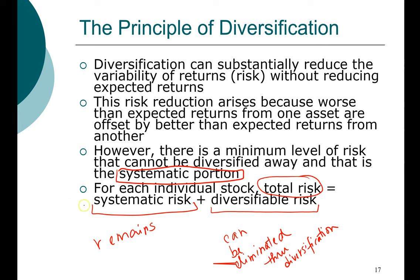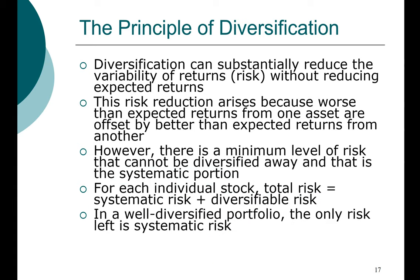It is very important to distinguish between the risk of an individual stock and the risk of a portfolio. For an individual stock, total risk has two components: a systematic component and a diversifiable component. Part of that risk can be eliminated through diversification, but part cannot. At the portfolio level, in a well-diversified portfolio, the only risk that remains is systematic risk. An under-diversified portfolio may still carry some diversifiable risk, but there is really no reason why investors cannot construct well-diversified portfolios.